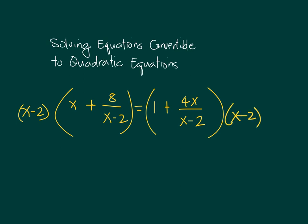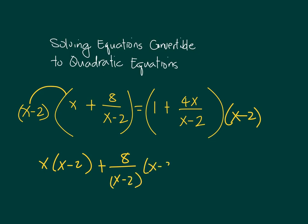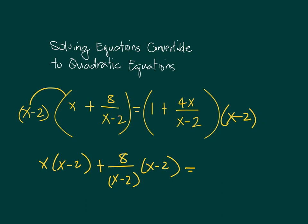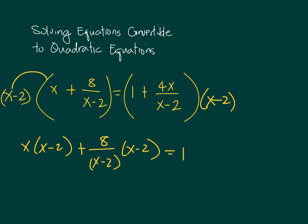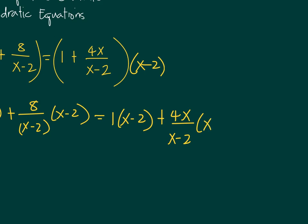From here, you have to follow the proper distribution of the expression by the distributive property. So we first distribute x minus 2 to x — you can have x times x minus 2. Then the 8 over x minus 2 will be multiplied by x minus 2. And what you have to do on the other side is just the same: the 1 gets an x minus 2, while the 4x over x minus 2 will also get an x minus 2.